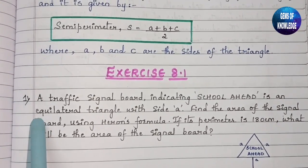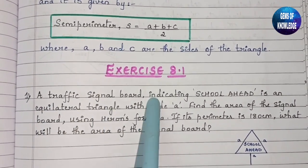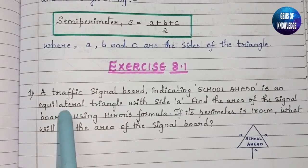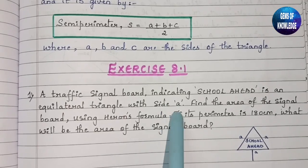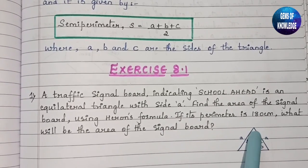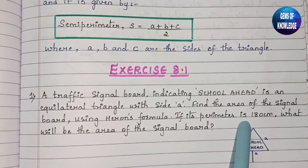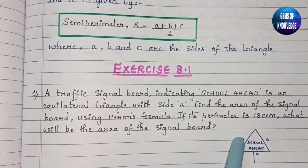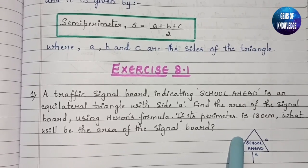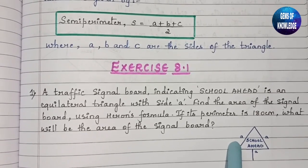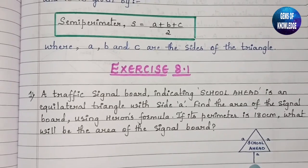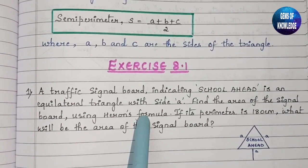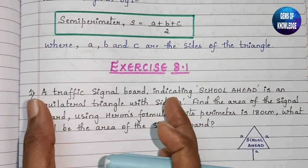The first question: a traffic signal board indicating 'school ahead' is an equilateral triangle with side A. Since it is an equilateral triangle, all three sides are equal — if one side is A, the other two sides are also A. We need to find the area of the signal board using Heron's formula.